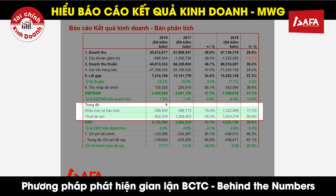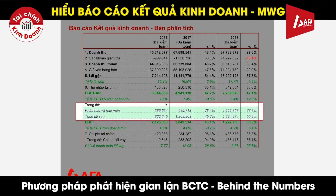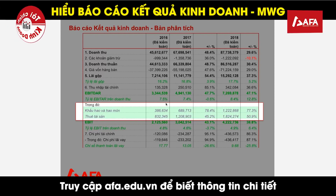Khấu hao và hao mòn cũng như thuê tài sản là các chỉ tiêu mang tính phi tiền tệ, và chúng ta cần loại trừ chúng để có thể ước tính được dòng tiền đối với một doanh nghiệp bất kỳ trên báo cáo kết quả kinh doanh.